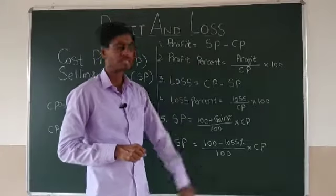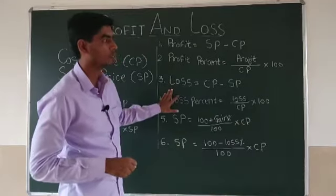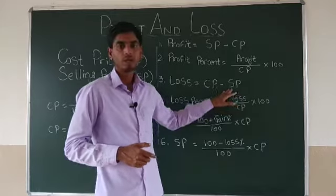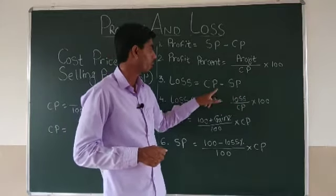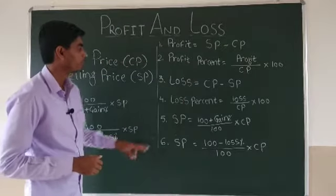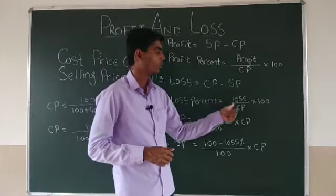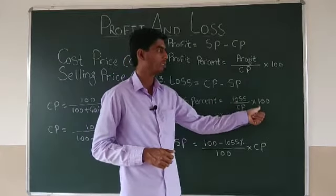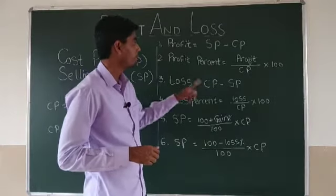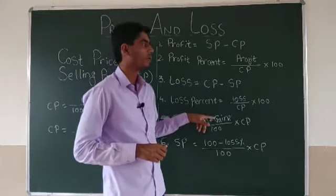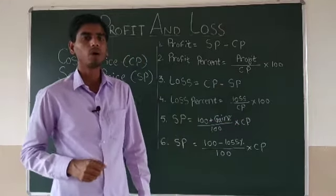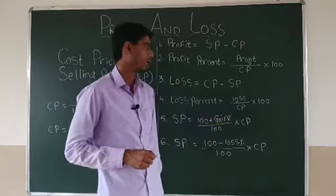To find loss, subtract selling price from cost price. To find loss percent, write loss over cost price and multiply by 100. Keep in mind: always calculate profit percent or loss percent on cost price, because whatever profit or loss we are gaining, it is on cost price only.